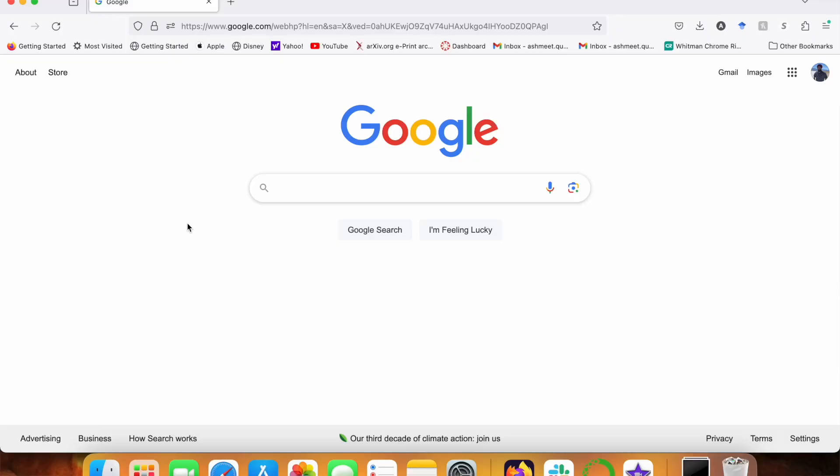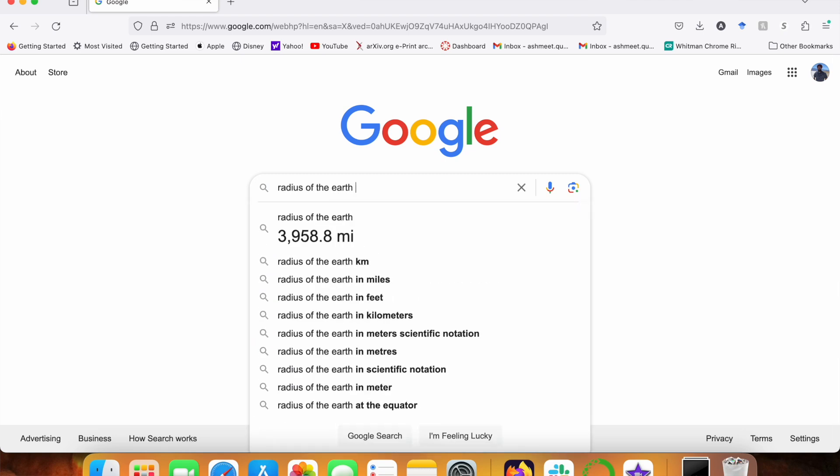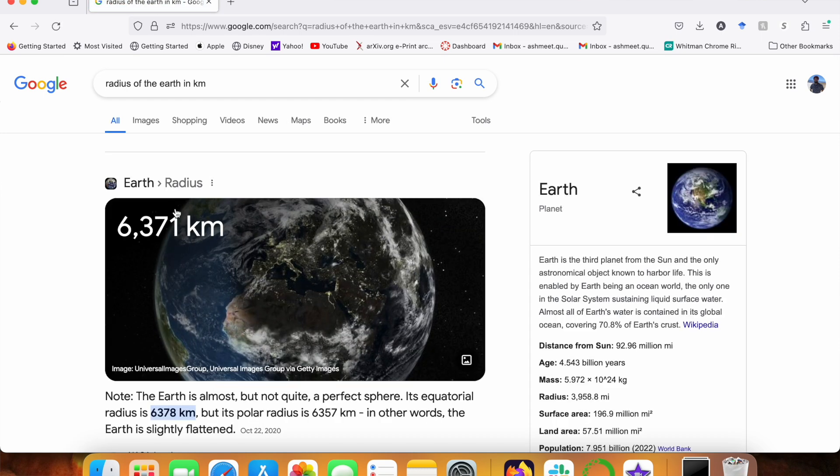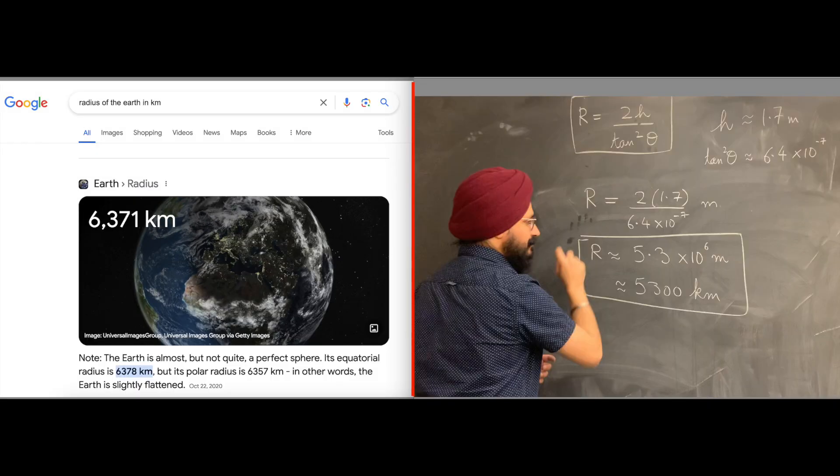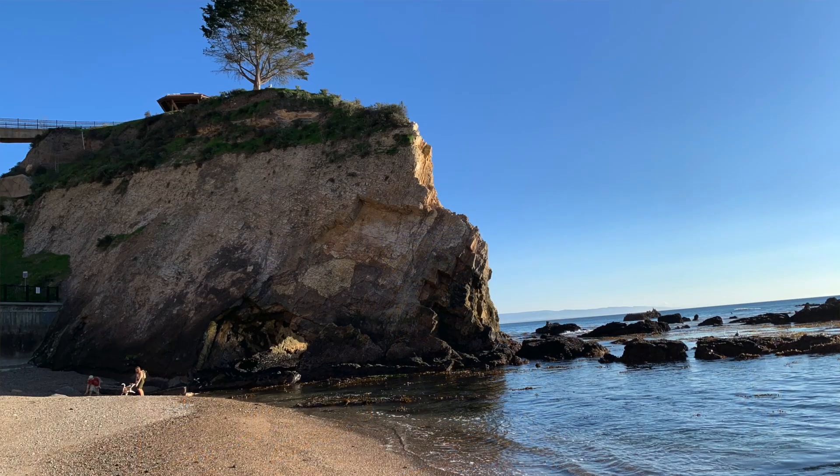So, we have an estimate for the Earth's radius, but how accurate are we? Let's ask the internet. I'm going to go over to Google, and I'm going to search for radius of the Earth in kilometers. It's about 6,300 kilometers. Hey, we got 5,300 kilometers. Correct order of magnitude, within 20% of the accepted value. Not bad at all for a chill day on the beach, eh?